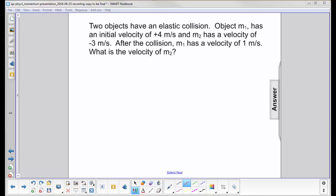Two objects have an elastic collision. Object 1 has an initial velocity of plus 4 meters per second. So I'm going to write V1 equals 4 meters per second.